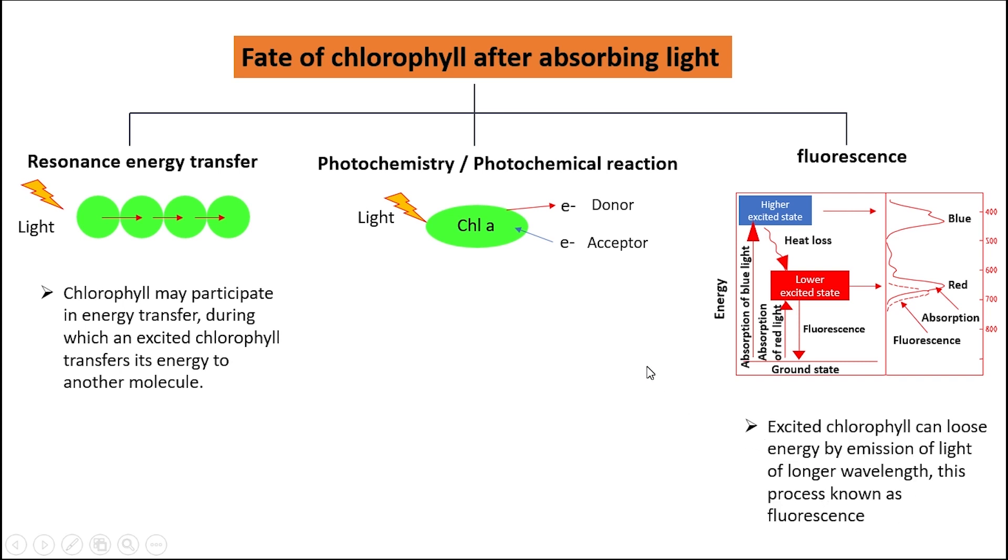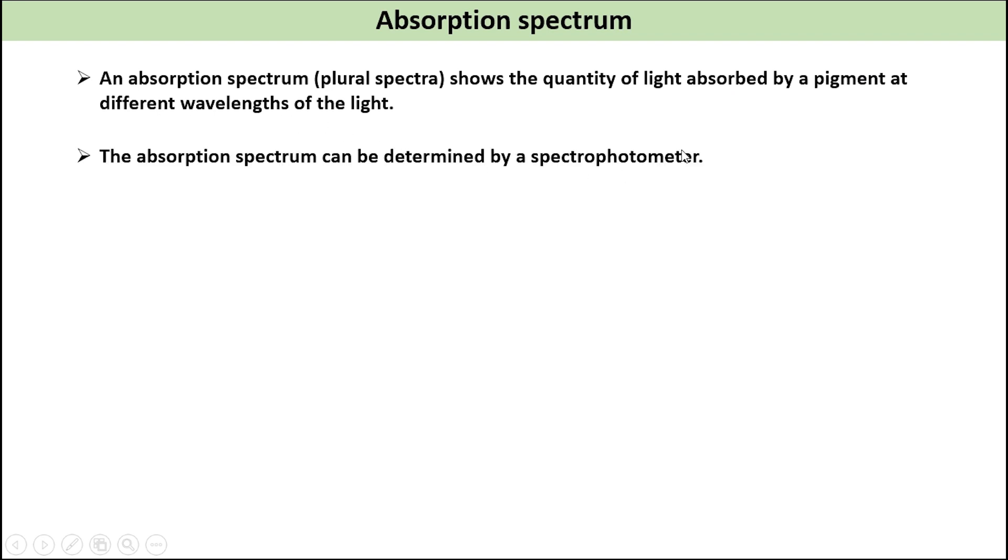Now we will talk about absorption spectrum. An absorption spectrum shows the quantity of light absorbed by a pigment at different wavelengths of the light. The absorption spectrum is measured by a spectrophotometer.